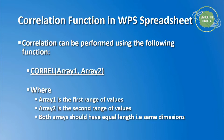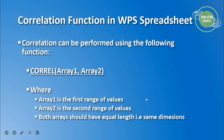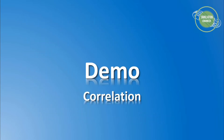Before we move to the demo, the correlation function available in WPS spreadsheet is called CORREL — short for correlation. It takes two input arguments: array one and array two. Array one is the first range of values, array two is the second range. Both arrays must have equal length, meaning the same number of entries. Now let's move to WPS spreadsheet to demonstrate.